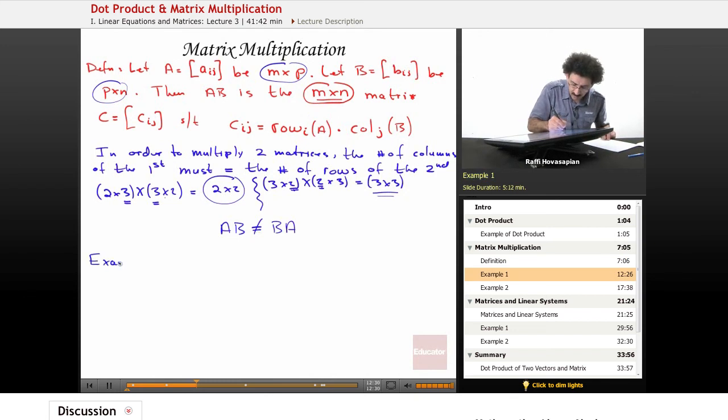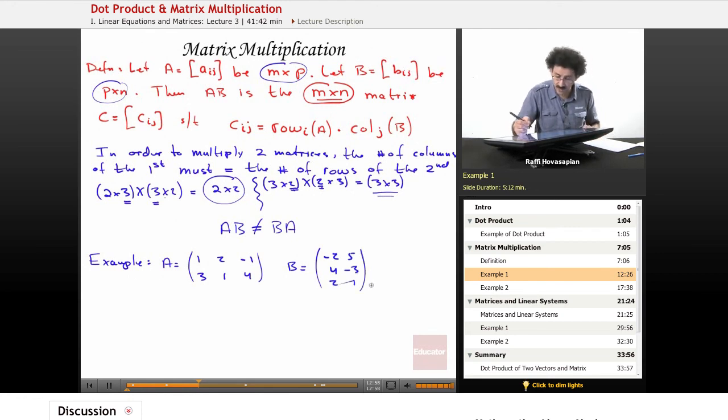So let's do some examples. Let's let A equal 1, 2, minus 1, 3, 1, 4. When doing matrix multiplication, go very slowly and go systematically. A lot of arithmetic, lots of room for mistake. Minus 2, 5, 4, negative 3, 2, 1.